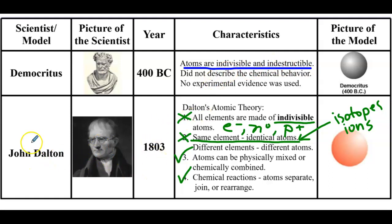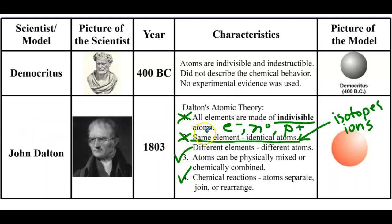Then there's John Dalton. This one is important because he came up with four theories, but only two of them were totally accurate. Number one and number two were not totally accurate, and you need to know why. His first statement: all elements are made of indivisible atoms. They are actually divisible into subatomic particles — electrons, neutrons, and protons. And so this is not a totally accurate statement that Dalton came up with.